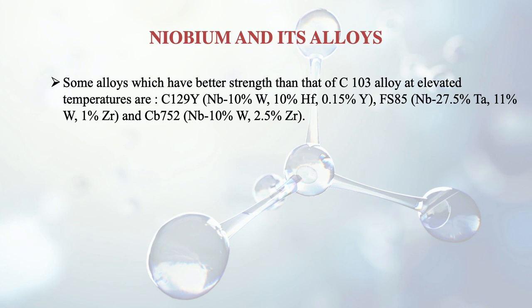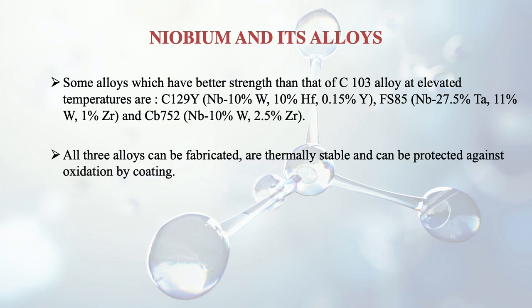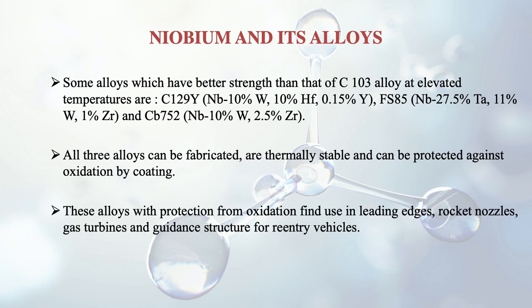Alloys such as C129Y, FS85 and CV752 are different types of niobium-based alloys. All three can be fabricated, are thermally stable, and can be protected against oxidation by coating. With protection from oxidation, these alloys find numerous uses in making rocket nozzles, gas turbines and guidance structures for reentry vehicles.